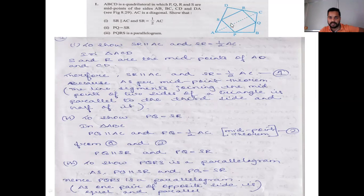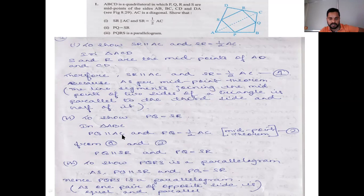From step 1, SR is parallel to AC and SR is equal to half of AC. Now consider triangle ABC. By the midpoint theorem, PQ is parallel to AC and PQ is equal to half of AC. Since SR is parallel to AC and PQ is parallel to AC, SR is parallel to PQ.